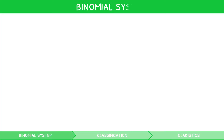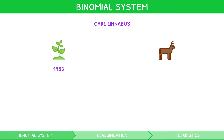The binomial system was developed by Carl Linnaeus when he wrote books on the known species of plants in 1753 and species of animals in 1758. This was later agreed to be the standard method of naming organisms during the late 19th century, during one of the annual International Botanical Congress meetings.